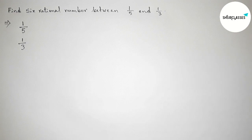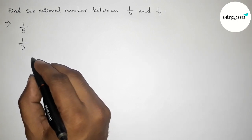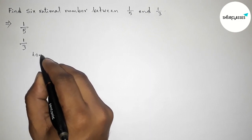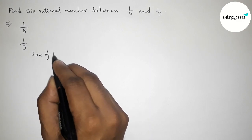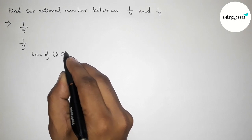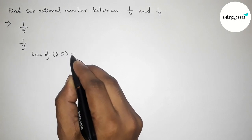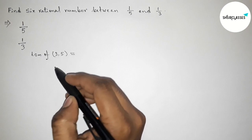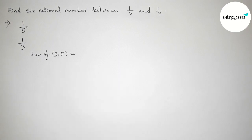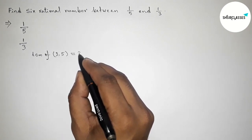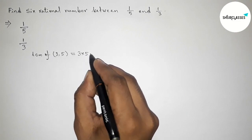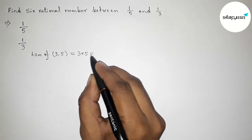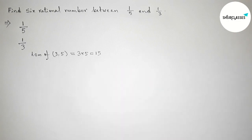So we have to make equal denominators. We need to find the LCM of 3 and 5 first. Since 3 and 5 are prime to each other, the LCM will be the product of the two numbers: 3 × 5 = 15. So 15 is the LCM of 3 and 5.